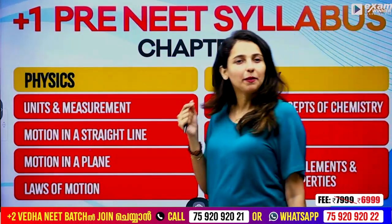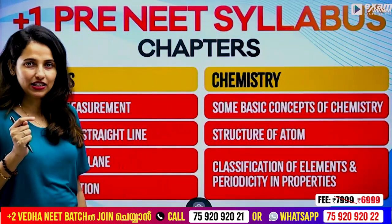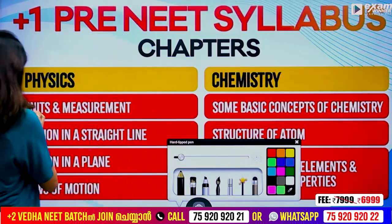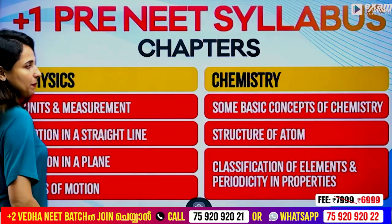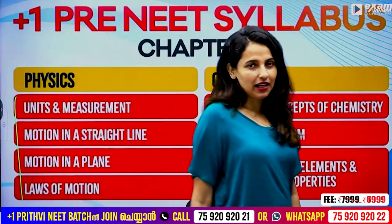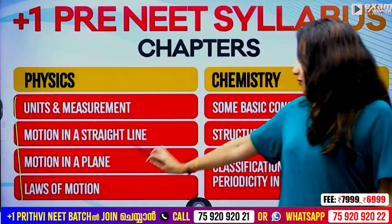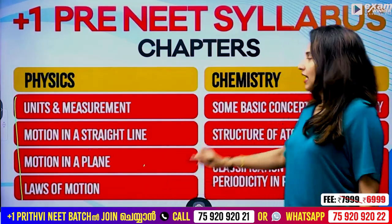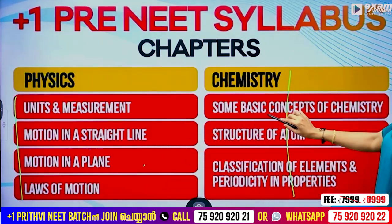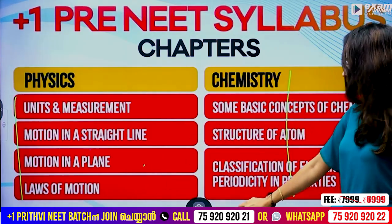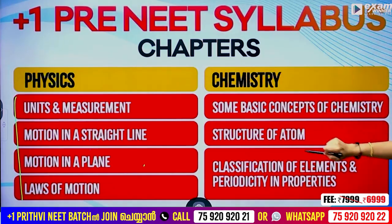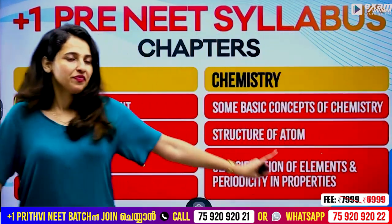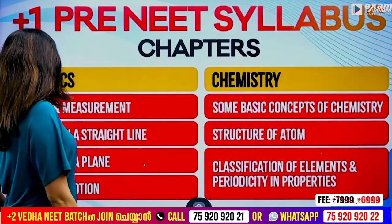We have chemistry, physics, and biology. In physics, we have 4 chapters: units and measurement, motion in a straight line, motion in a plane, and laws of motion. In chemistry, we have some basic concepts of chemistry, structure of atom, and classification of elements and periodicity in properties.